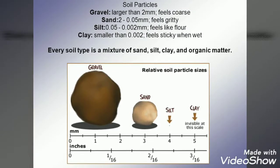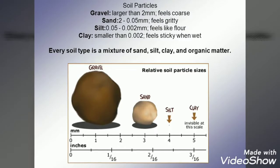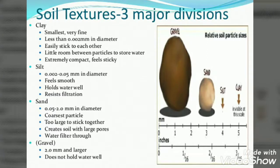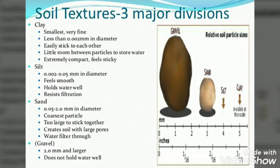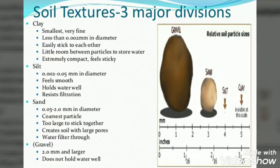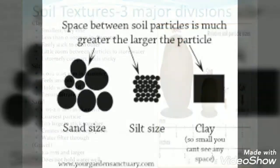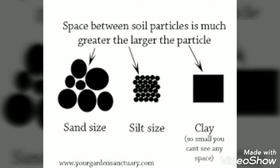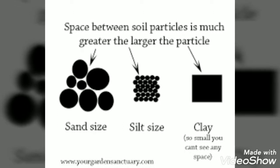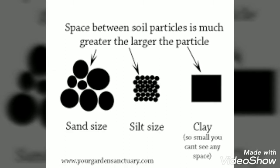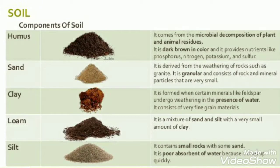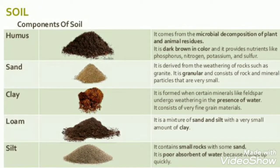Sand. Smaller particles which are somewhat the size of sugar grains are called sand. Silt. The powder-like particles are called silt. Clay. The smallest sized particles of the soil that are sticky when wet is clay. Humus. The soil also contains dead remains of plants and animals, which are called humus. Soil also contains air and water.